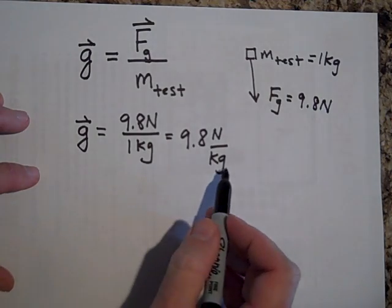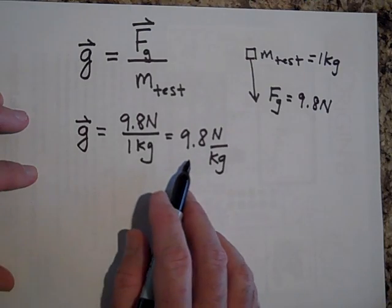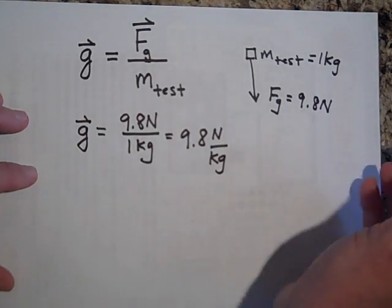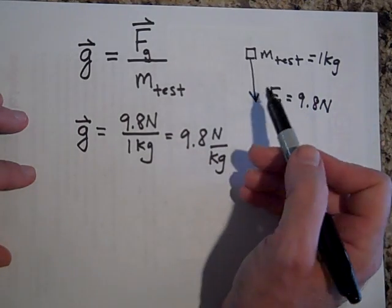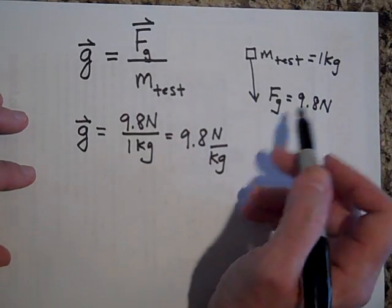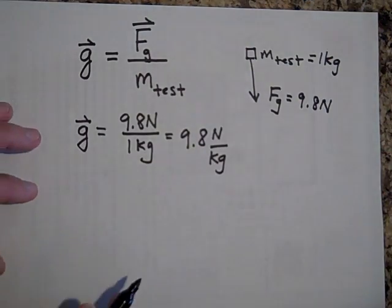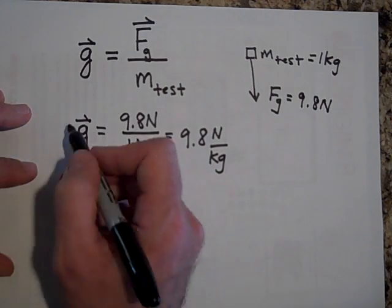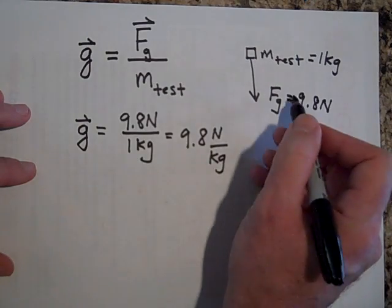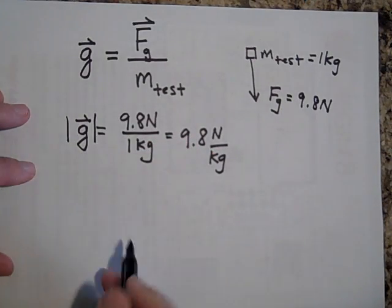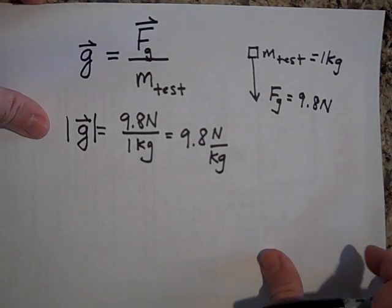What this means is for every kilogram you put there, there'll be 9.8 Newtons. In fact, if you take this mass away, the way we think about it is when you take the mass away, you still have the field, the gravitational field, and any mass you put there, there'll be a force of 9.8 Newtons for every kilogram you put there. So that's the field strength. And if I just want to talk about the magnitude of the field strength, then I just do that.